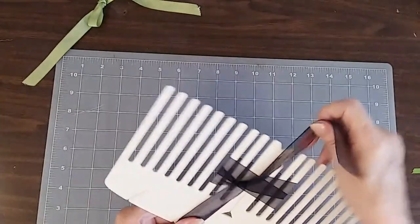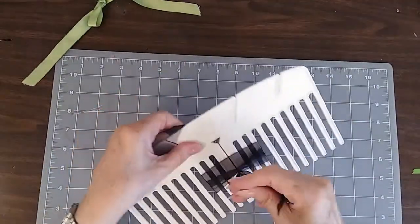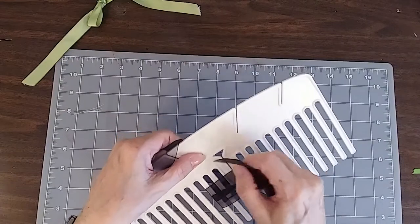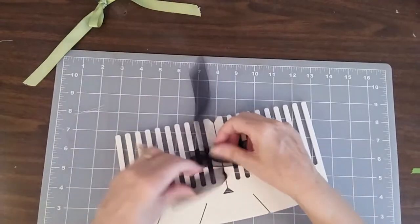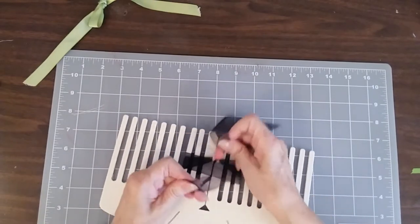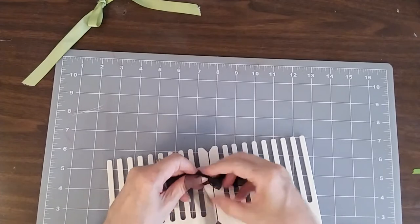Thread it through the center, down around the back, and through the bottom. Pull it taut, and a simple knot.